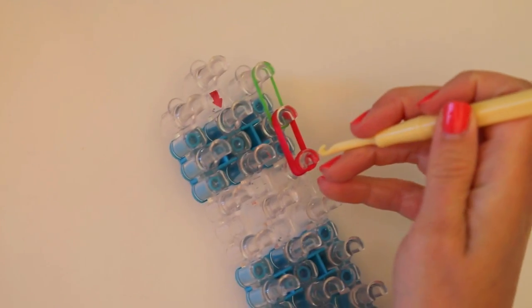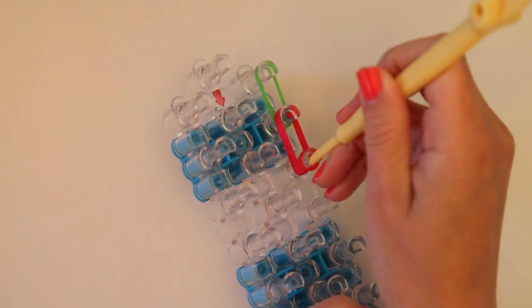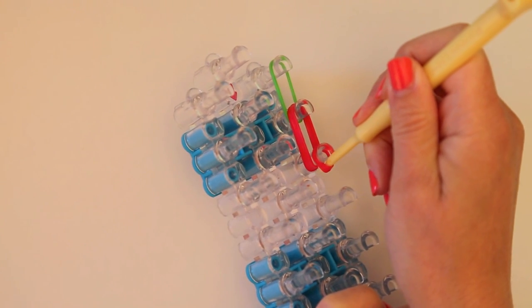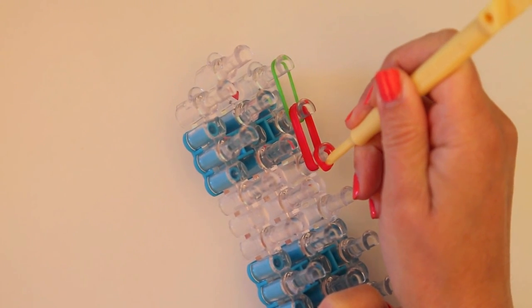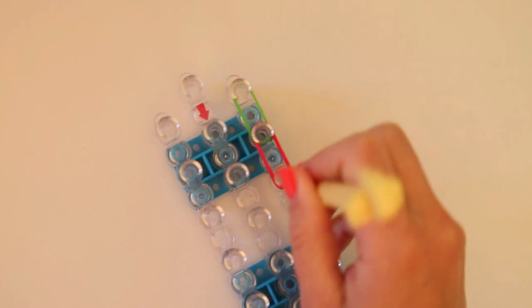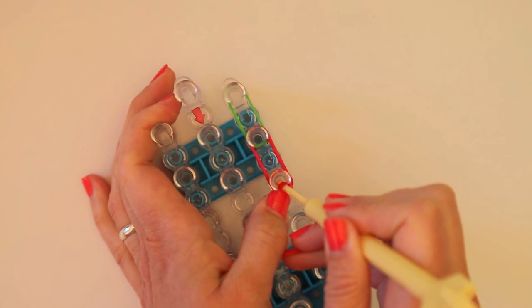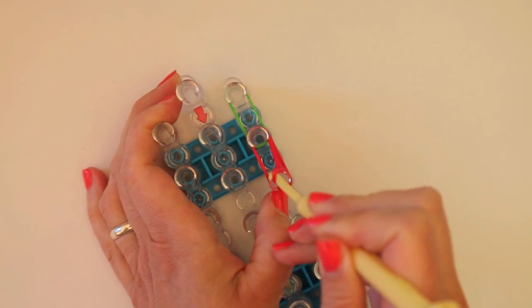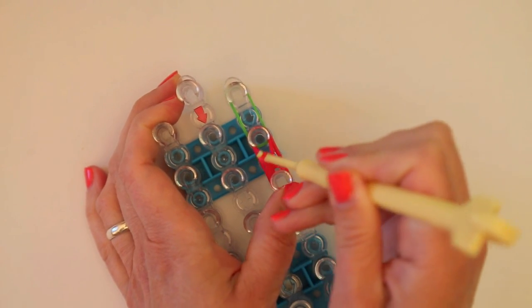So for the other cherry, once again, we're just going to pull back that tripled over cap band with our hook. Catch one or two of the bands underneath. Keep a thumb over that cap band so that it doesn't pop off before you're ready for it.